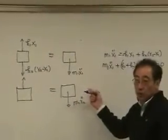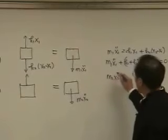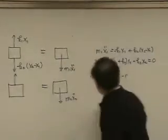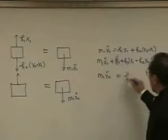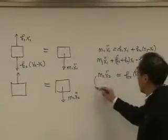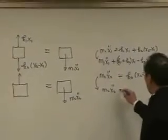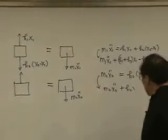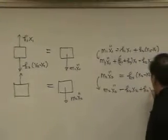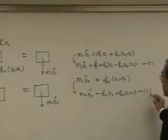That has to be equal to M2X2 double dot. Therefore, this pictorial expression of Newton's second law gives us the following equation. M2X2 double dot is equal to minus K2(X2 minus X1). Therefore, we have M2X2 double dot plus K2X2 minus K2X1 is equal to zero. So we have two equations, equation 1 and equation 2.